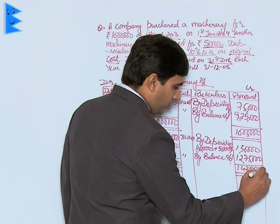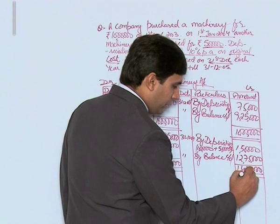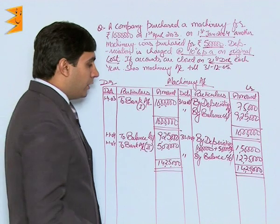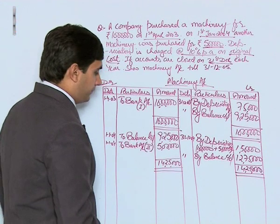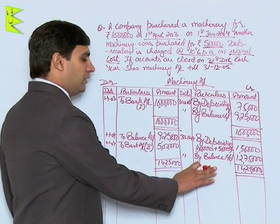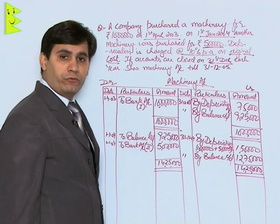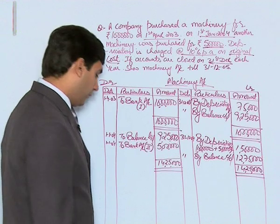By balance carried down on 31st December 2004: rupees 14,25,000 minus rupees 1,50,000 = rupees 12,75,000. The total on both sides is rupees 14,25,000.